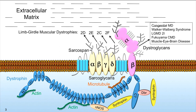Mutations in the dystrophin gene can cause Duchenne or Becker muscular dystrophies. Mutations in the sarcoglycan genes cause different forms of limb girdle muscular dystrophy, and mutations in at least 15 different genes responsible for processing the protein dystroglycan can also cause different forms of congenital or limb girdle muscular dystrophies. So this particular protein complex is responsible for the majority of the different muscular dystrophies, although not all of them.